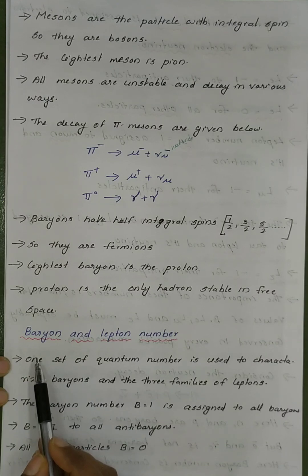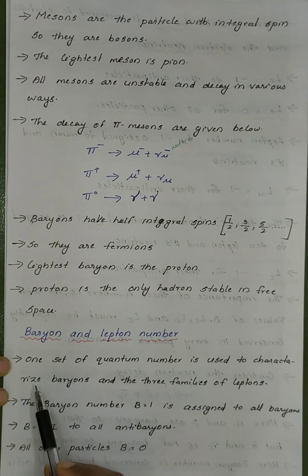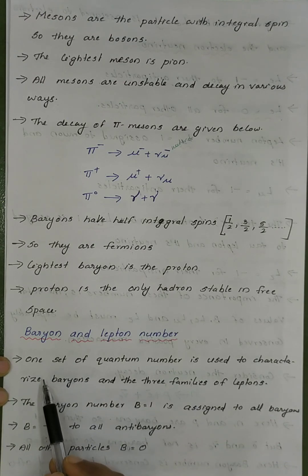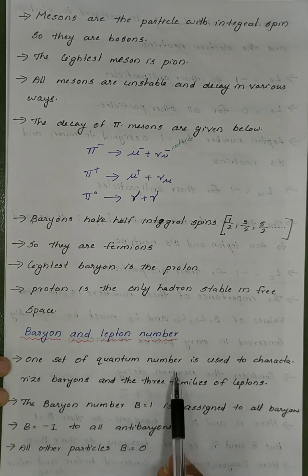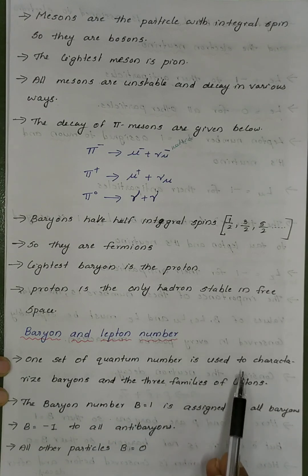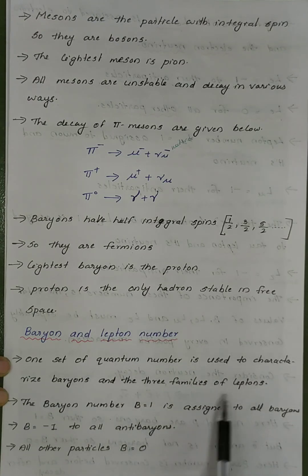Good morning to all! We are going to discuss Baryon Numbers and Lepton Numbers. What is Baryon Number? What is Lepton Number? One set of quantum numbers is used to characterize Baryons and the three families of Leptons.